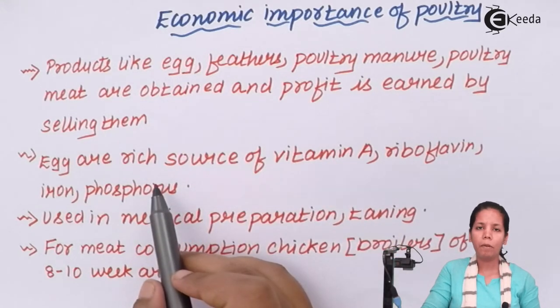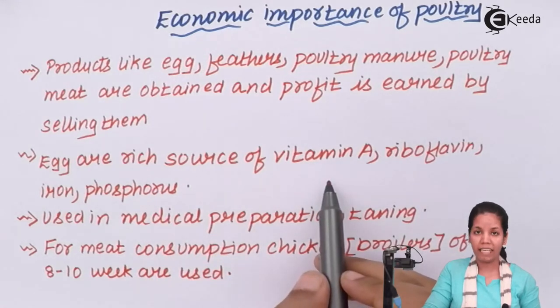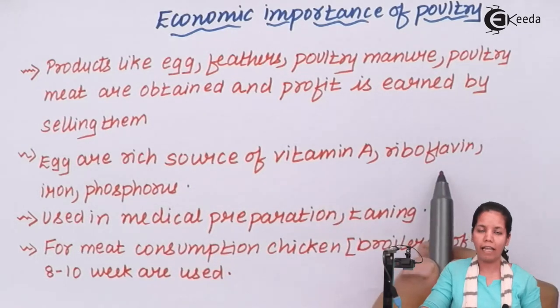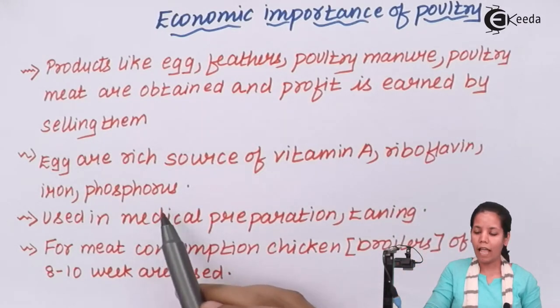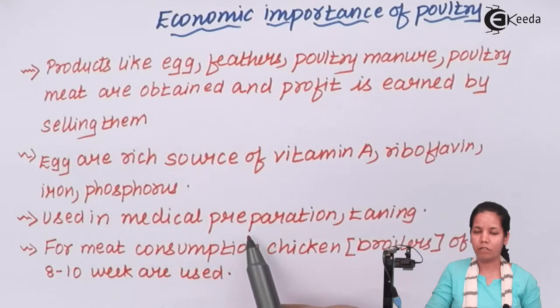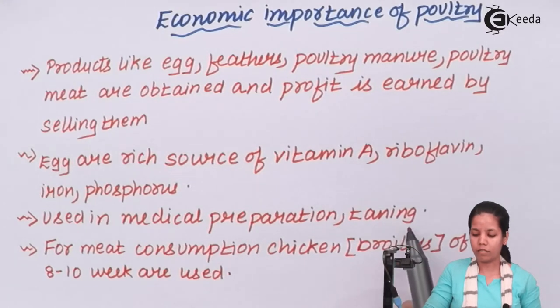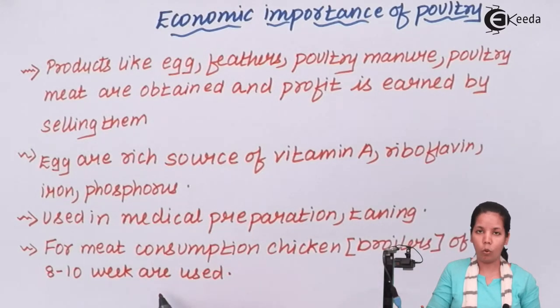Egg being one of the main poultry products, it's quite rich in vitamin A, calcium, riboflavin, iron and phosphorus. It's widely used for consumption as well as for medical preparations or tanning process. Now, for meat consumption boilers chicken are used which are around 8 to 10 weeks old.